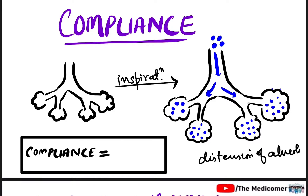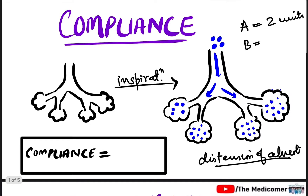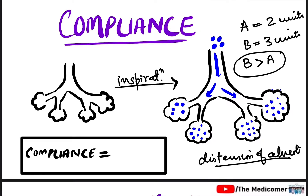More distension means more compliance. In person A, inspiring the same amount of air causes the alveoli to distend by two units. In person B, inspiring the same amount causes distension of three units. So the compliance of B will be more than compliance of A. In simpler language, compliance is how easily the alveoli or lungs of a person can inflate.